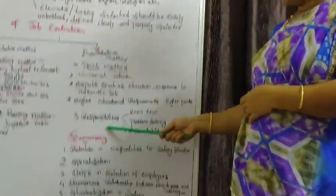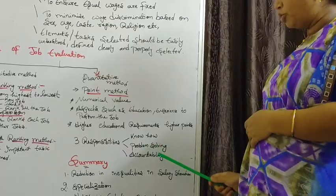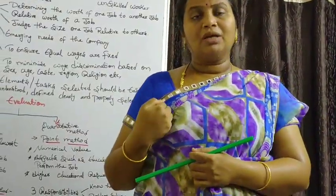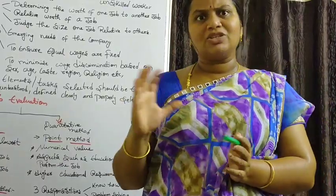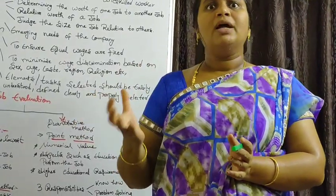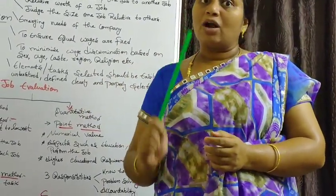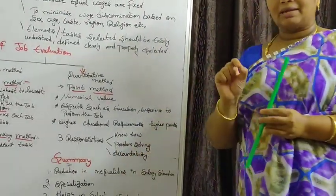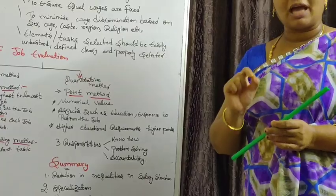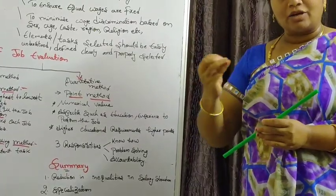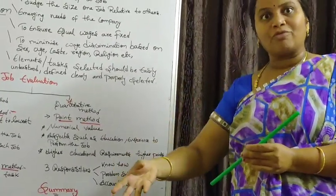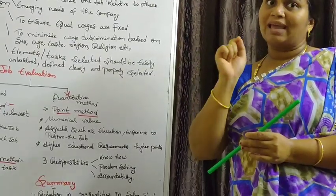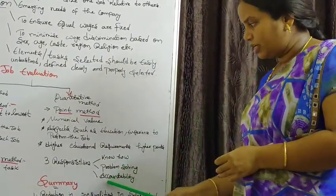There are three responsibilities in the quantitative method: know-how, problem solving, and accountability. We must understand what kind of work we are doing, solve problems, and accountability is most important — every minute we have to be accountable for what work we did, what time we spent. Every minute, every rupee is important. That is called accountability.